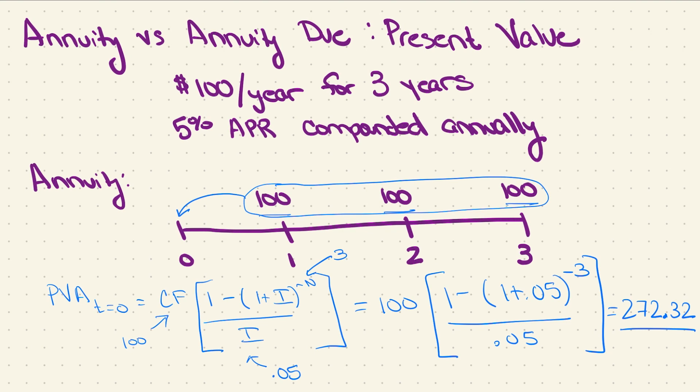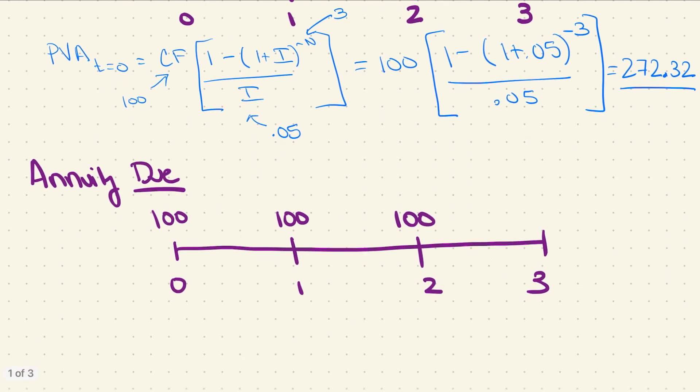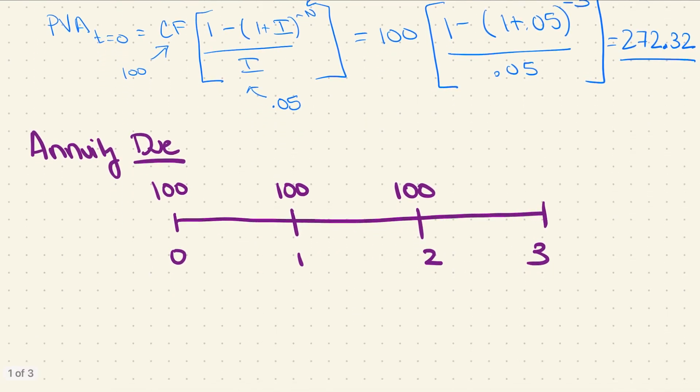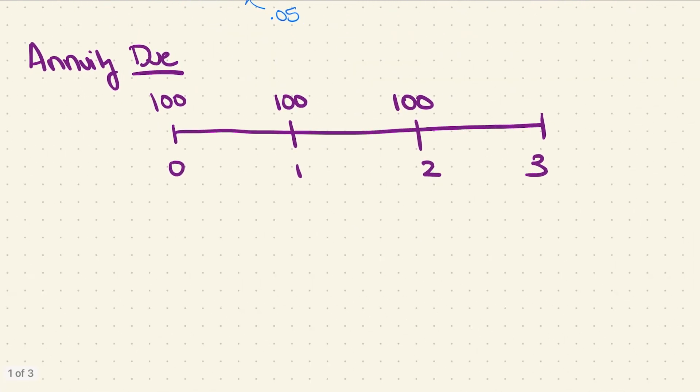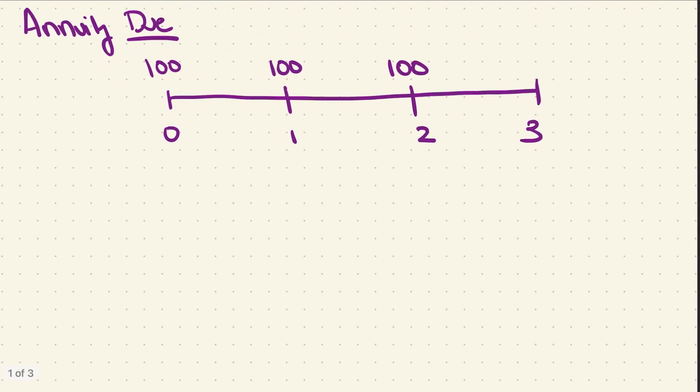We'll come back and look at the interpretation of that answer in a second. Now if I switch my cash flows to be what's called an annuity due instead, each one of my cash flows occurs at the beginning of the period. I still have three cash flows though, the exact same number of cash flows, just the timing is different.